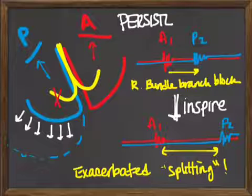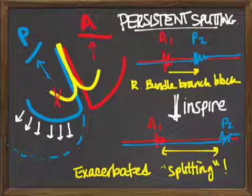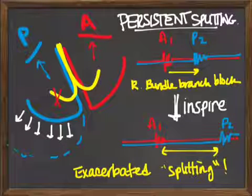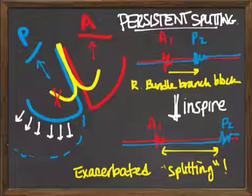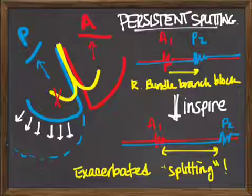So in summary, this is called persistent splitting because no matter if you have right bundle branch block or if you inspire, they're going to be split anyway. The splitting isn't attenuated by the inspiration. Rather, it exacerbates it, so it's persistent.